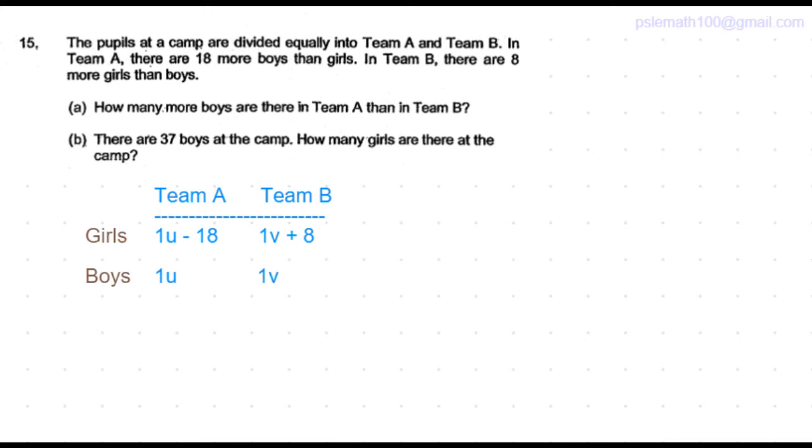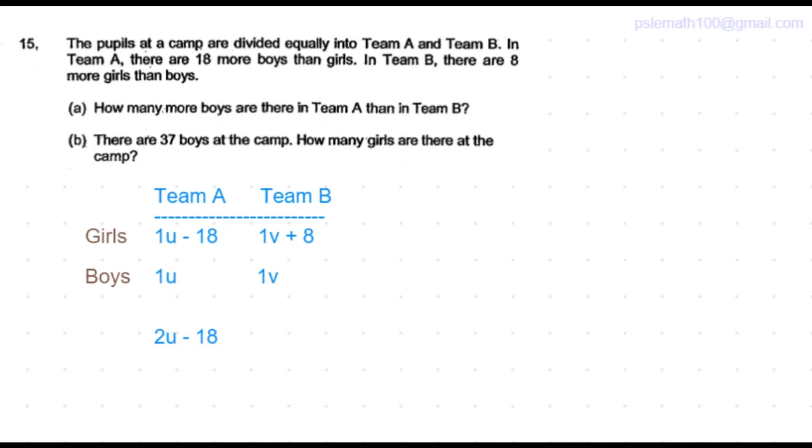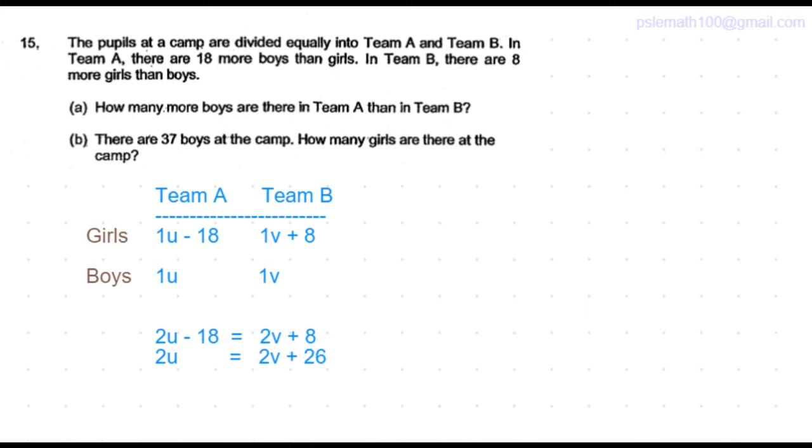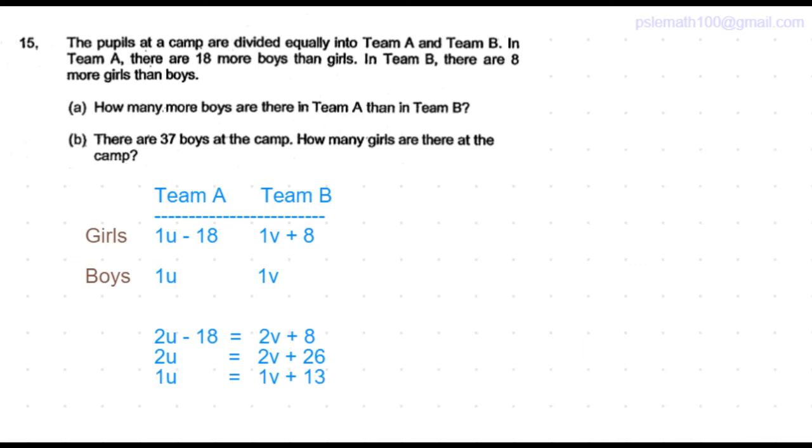The pupils at the camp are divided equally into Team A and Team B, so the number of pupils in Team A and Team B are equal. The total number of pupils in Team A is 2u minus 18, and that is equal to the total number in Team B, which is 2v plus 8. So we get 2u to be equal to 2v plus 26, so 1u is equal to 1v plus 13.